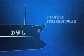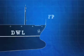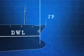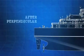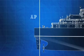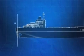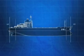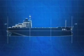The forward perpendicular, or FP, is a vertical line drawn at the intersection of the design waterline and the foreside of the stem of the hull. The after perpendicular, or AP, is a vertical line drawn at the intersection of the design waterline and the aftmost point of a ship's hull. For most commercial vessels, this is generally where the rudder post is located.